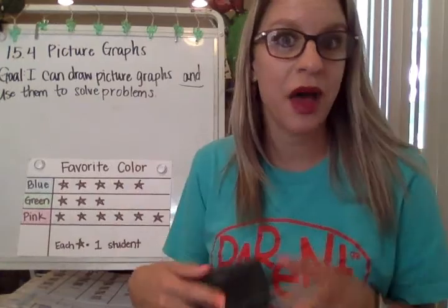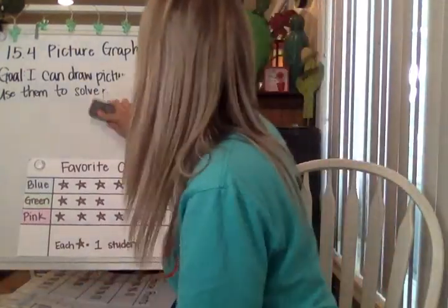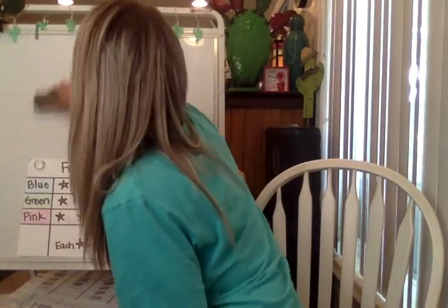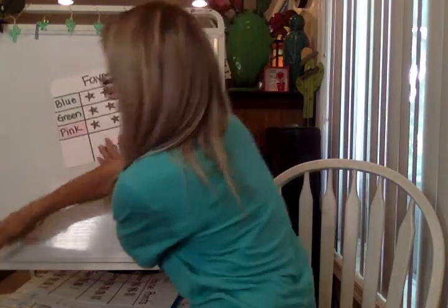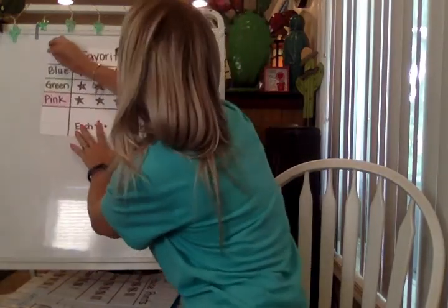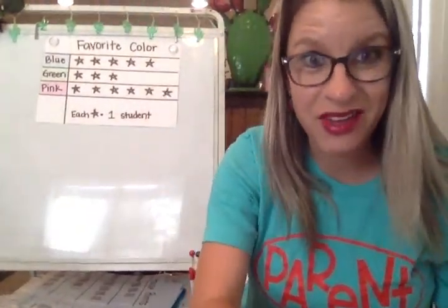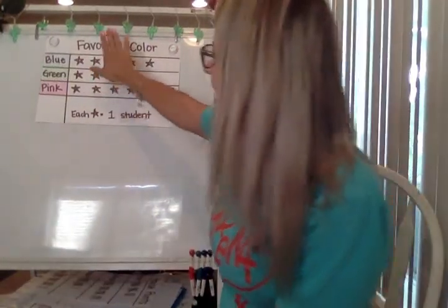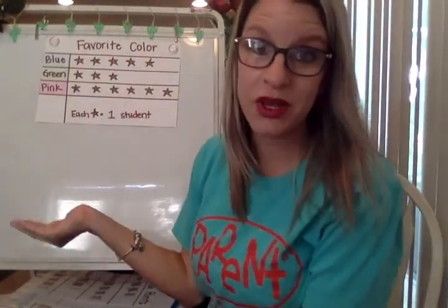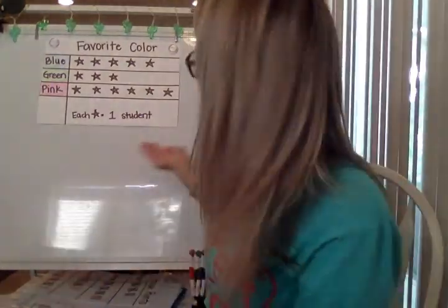I went ahead and already drew out a picture graph. I'm also going to have some information that we're going to use to create our own picture graphs. This one is about favorite colors. Let's check out this information and see what we can learn from it. You can check out the title — it says favorite color. So we know these words are going to be color words, talking about the different colors that people liked.